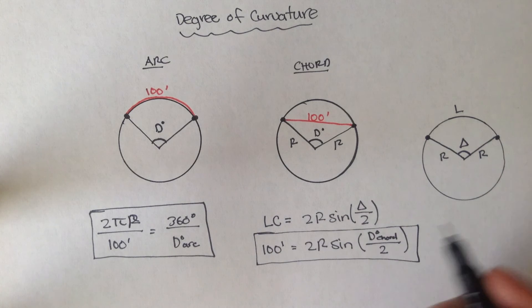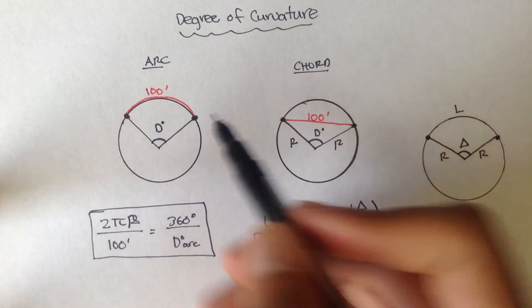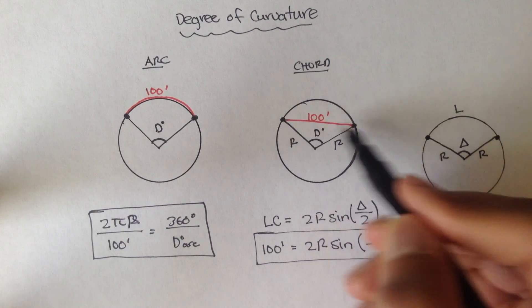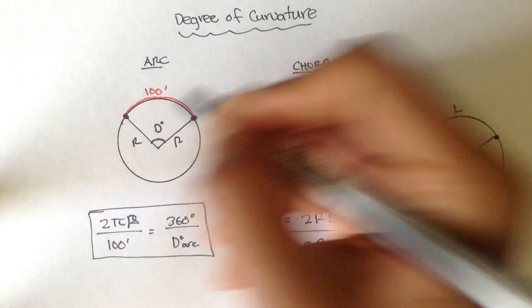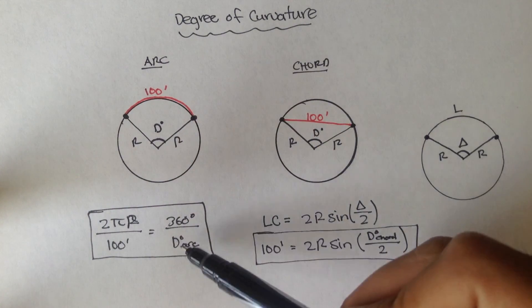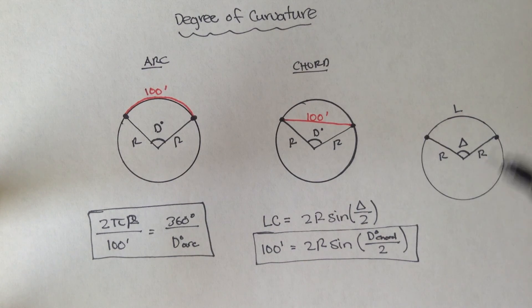So, degree of curvatures are only used to figure out the radius for curves, for an arc that has a curved length of 100, or for chords that have a chord length of 100. And these are the two formulas we can use. This one for the arc, and this one for the chord.